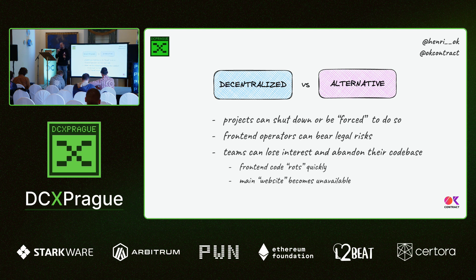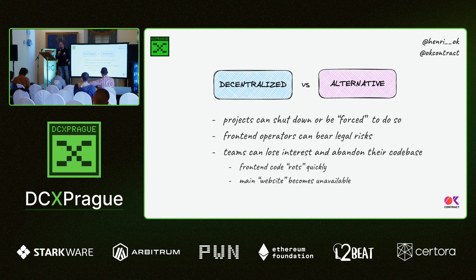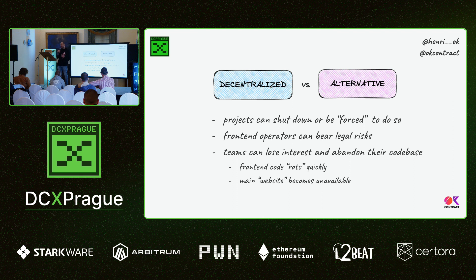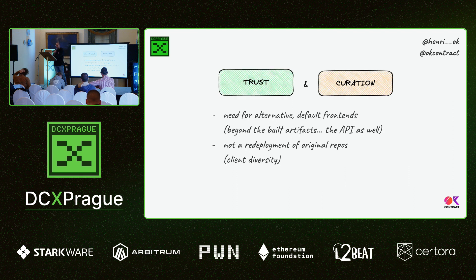So, decentralized versus alternative — why go beyond decentralized? A project can be forced to shut down. Frontend operators might have legal risks and teams can lose interest as well, abandoning the codebase. We see markets going from bull to bear and some projects disappear. But the smart contracts are still on-chain. Users of a DeFi project can still have liquidity they can freely withdraw using the contracts. But if there's no more frontend, for many users it will be harder to do so.